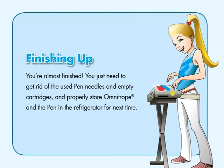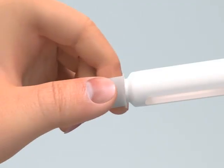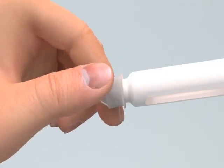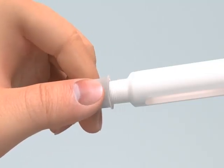Carefully replace the outer pen needle shield. Hold the pen by the cartridge holder and unscrew the pen needle from the cartridge holder.